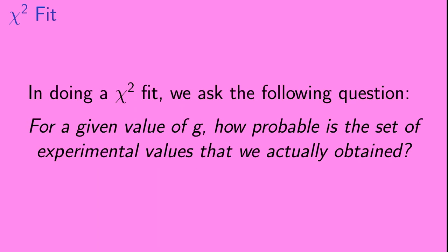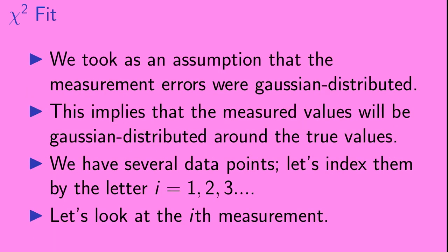Okay, so in doing a chi-squared fit, we ask the following question. For a given value of g, how probable is the set of experimental values that we actually obtained? Okay, so we took as an assumption that the measurement errors were Gaussian distributed. This implies that the measured values will be Gaussian distributed around the true values.